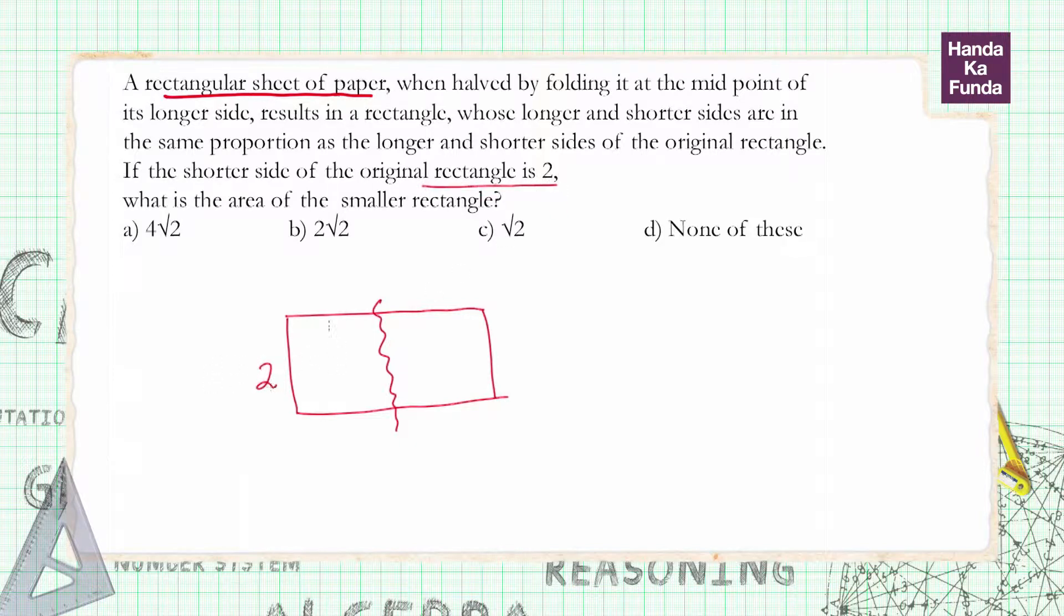So let's say this is 2 and the ratio was 2 is to k, or 1 is to k was the ratio. So that means the entire side was 2k. So what will be for the smaller rectangle since it's divided in the middle? It will be k.